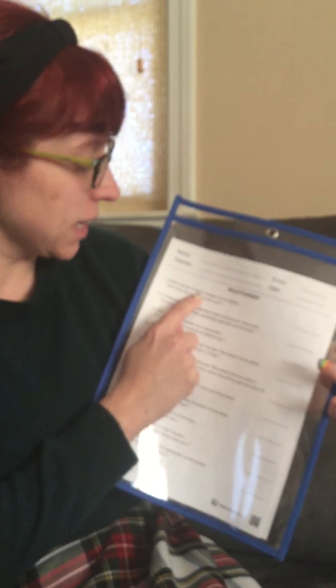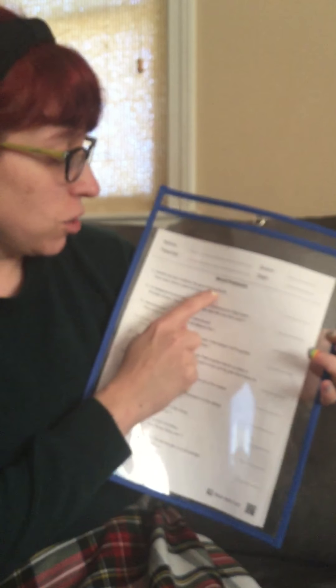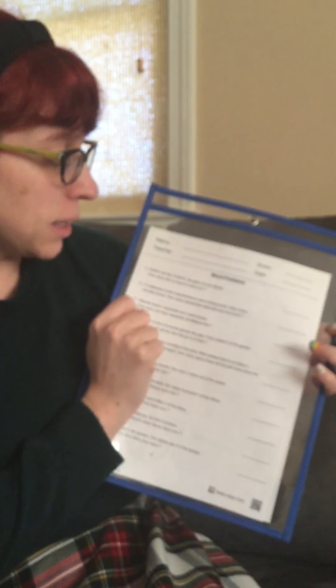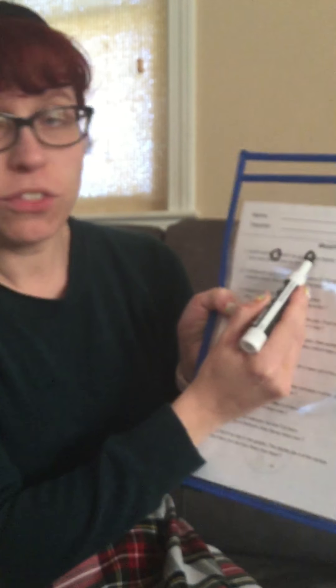So the first word problem I have is: Keith's cat had six kittens. He gave three to his friends. How many kittens does he have now? So first you want to circle the numbers — we have six and three. Then in order to figure out what you do with it, you need to read the information. His cat had six and he gave three, so if you're giving three away, it would be minus. So six minus three.